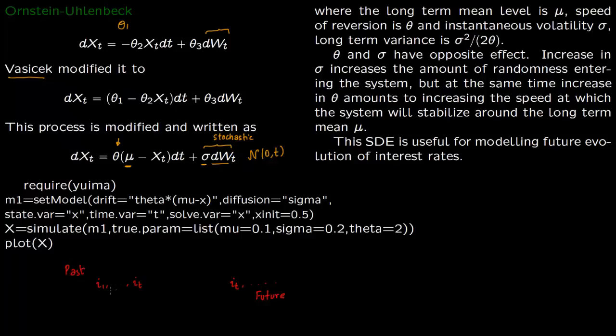So in the past data you can find the mean of the data. So the mean would be mu and then you can find the variance of the data. So the variance you write as sigma square by 2 theta. So you compute the variance you equate it equal to sigma square by 2 theta.